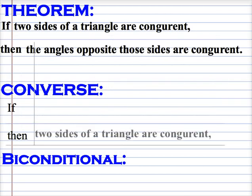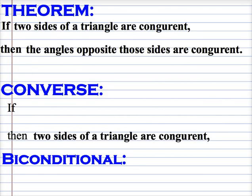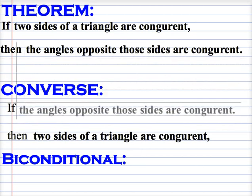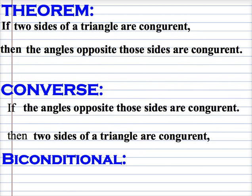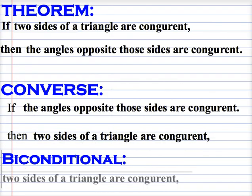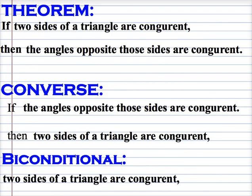The converse would be if the base angles are congruent, then the sides are congruent. In other words, if the base angles are congruent, then we have an isosceles triangle. The biconditional says two sides are congruent if and only if the two angles are congruent.